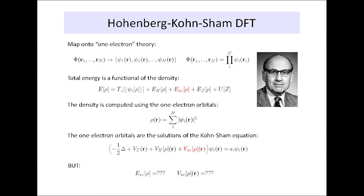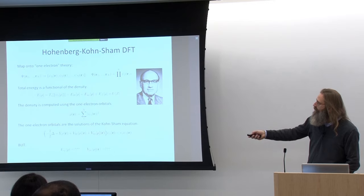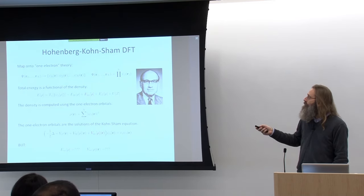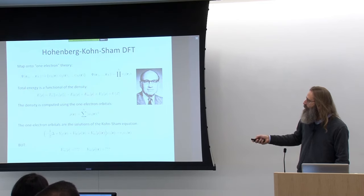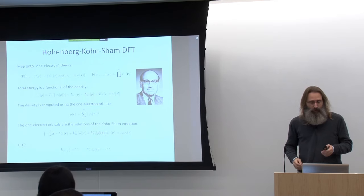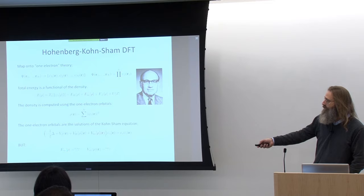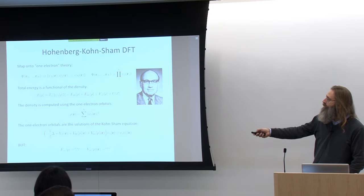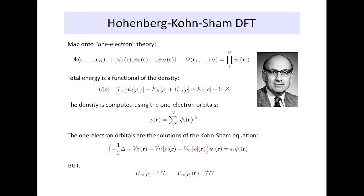That takes us only part of the way, because existence doesn't mean we know what it is exactly. The density is computed from the one-electron orbitals in a straightforward way, and from Kohn-Sham DFT we know how to compute these one-electron orbitals. They are the solution to what looks like a Schrödinger equation but isn't — it is a Kohn-Sham equation. We see again kinetic energy, interaction with the nuclei, electrostatics, and the exchange-correlation potential. Both of these objects exist, but we do not know exactly what they are.